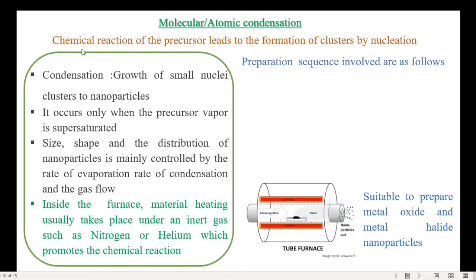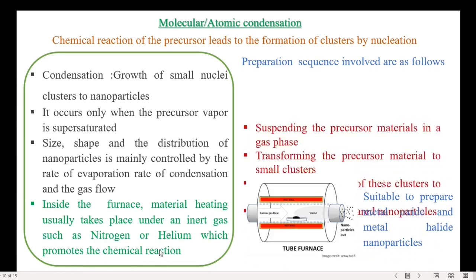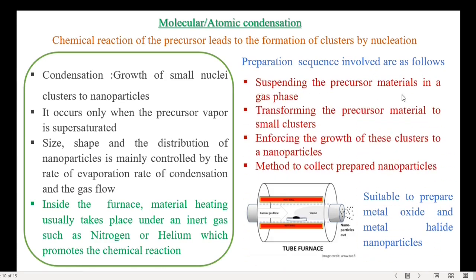The next preparation technique is molecular or atomic condensation. In this method, the chemical reaction of the precursor leads to the formation of clusters by nucleation. Condensation represents the growth of small nuclei clusters to nanoparticles, and it occurs only when the precursor vapor is supersaturated. The size, shape, and distribution of nanoparticles are mainly controlled by the rate of evaporation, rate of condensation, and the gas flow. Inside the furnace, material heating takes place under an inert gas such as nitrogen or helium, which promotes the chemical reaction. The preparation sequences are: suspending the precursor materials in a gas phase, transforming the precursor to small clusters, enforcing the growth of clusters to nanoparticles, and collecting the prepared nanoparticles. Thus, it is a suitable method to prepare metal oxide and metal halide nanoparticles.